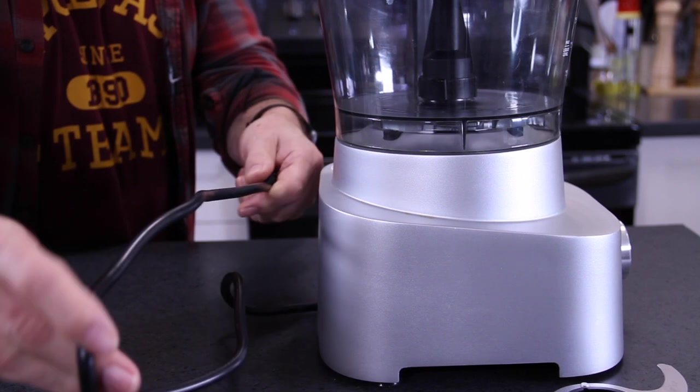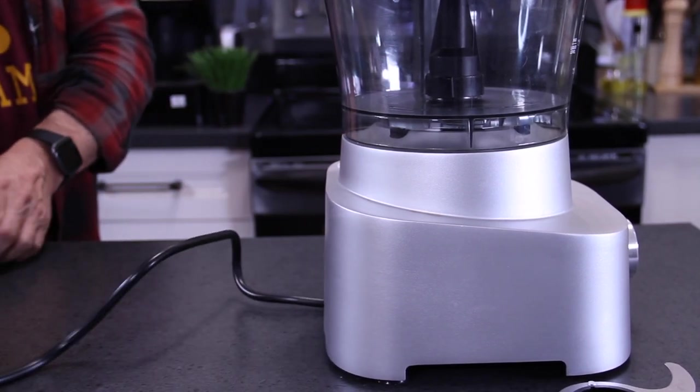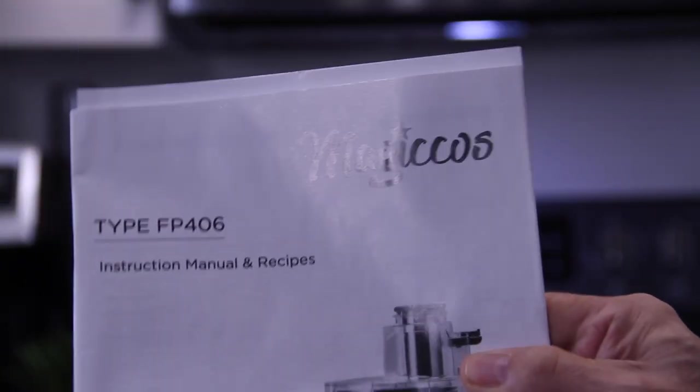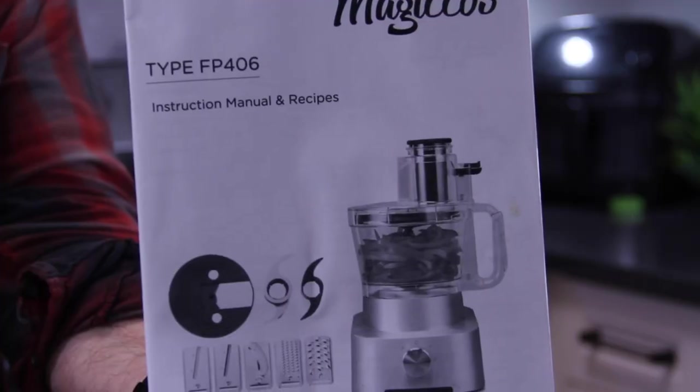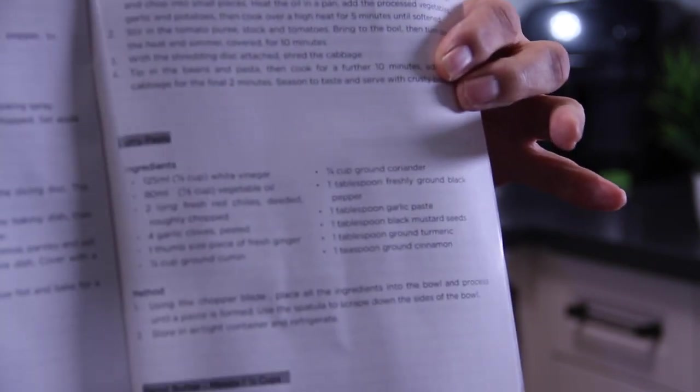Another thing that did impress me about this Magicos food processor is the length of the cord. It's about three feet long. Another thing that came packed in the box is a detailed instruction manual along with a quick guide. And I found this really important. I must say incredibly helpful too. And as a bonus in the back of the manual you will find what I consider to be 15 or 20 reasonably good recipes.